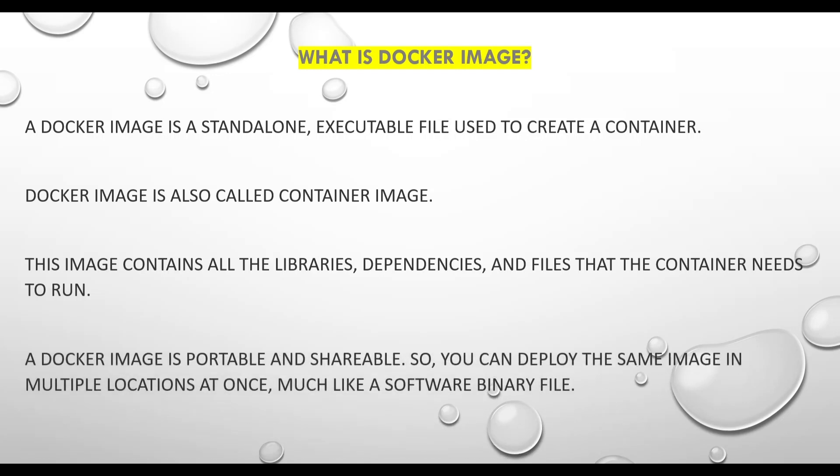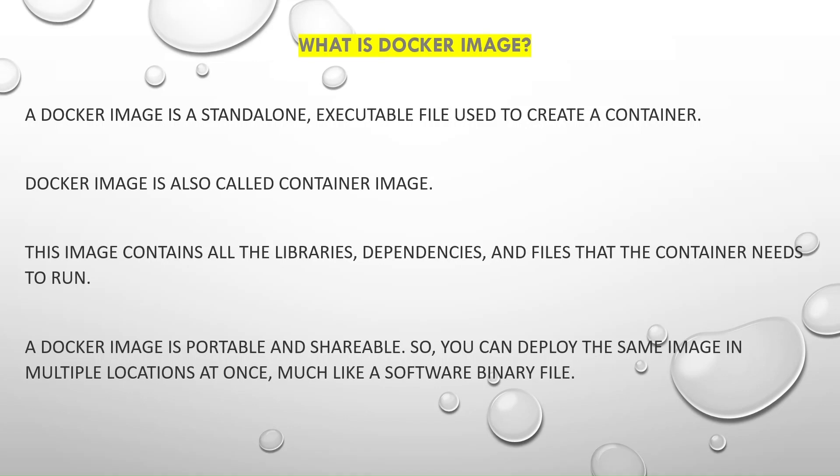Now a Docker image is portable and shareable — this is the main benefit of a Docker image. You can deploy the same image in multiple locations at once, much like a software binary file. You will create an image, put all the libraries and dependent files into it, and then you can port and share that image anywhere. We will see the full step-by-step process on how to create this Docker image in today's video.